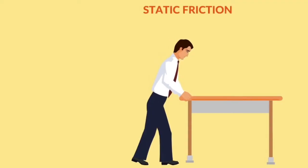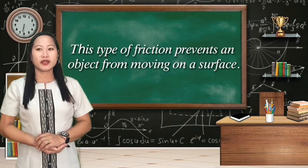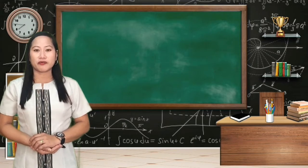Static friction occurs in stationary objects or objects at rest. This type of friction prevents an object from moving on the surface.